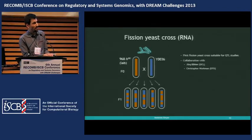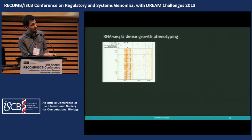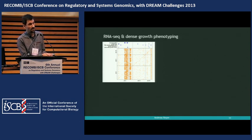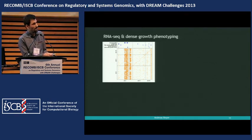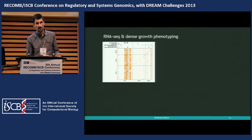This was a collaboration with Jörg Bähler at UCL and Chris Workman at the DTU. The results show a QTL matrix: the fission yeast genome has only three chromosomes. On one axis we have the variants, and on the other axis we have the genes whose expression is affected by these variants. A dot means this locus is affecting the expression of this gene. You have the cis band for local QTLs, and everything outside the cis band are trans EQTLs. On top are growth traits affected by these variants, and this matrix is quite dense — we found thousands of EQTLs.